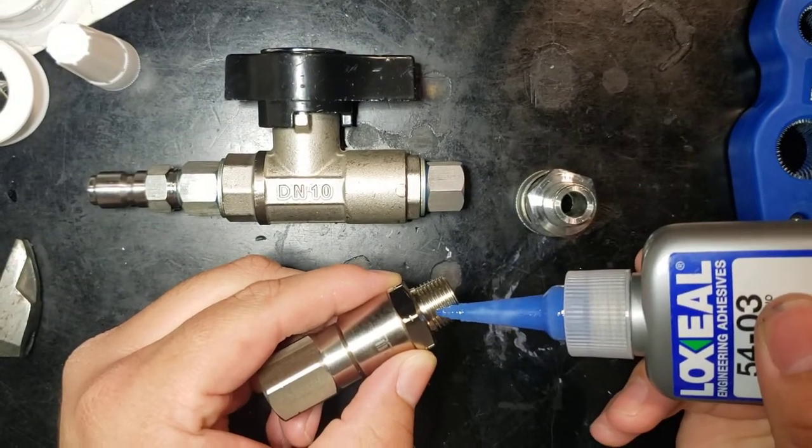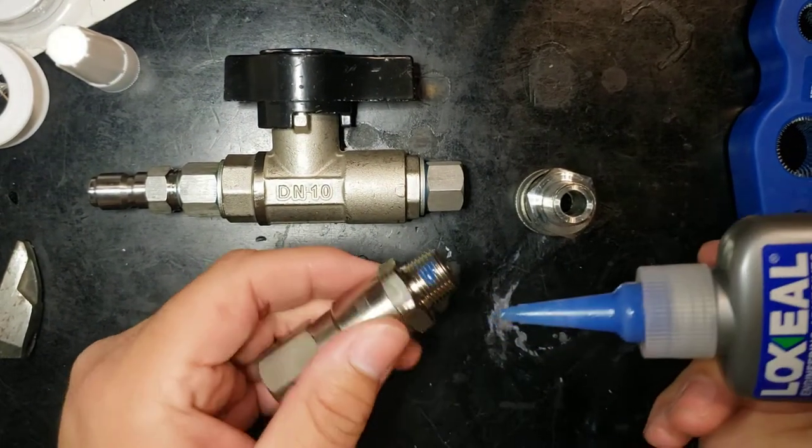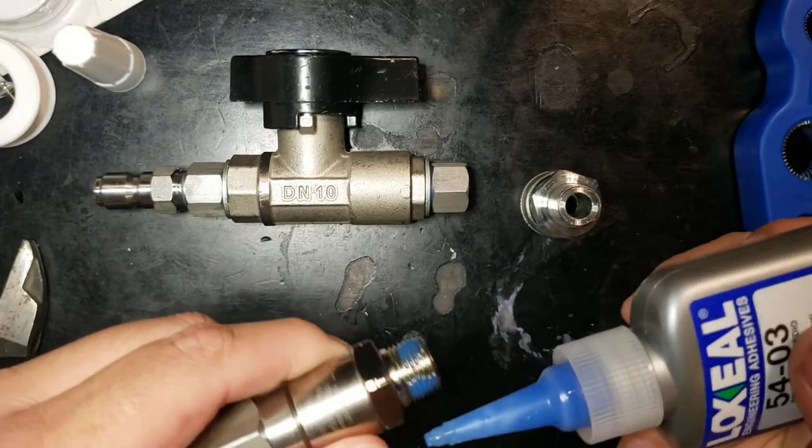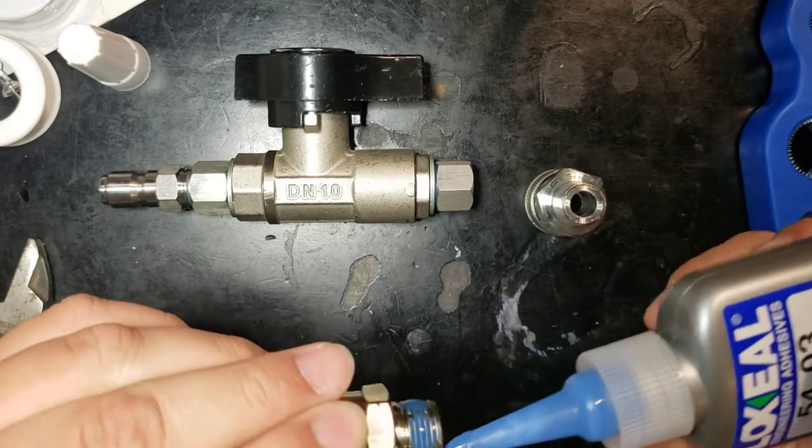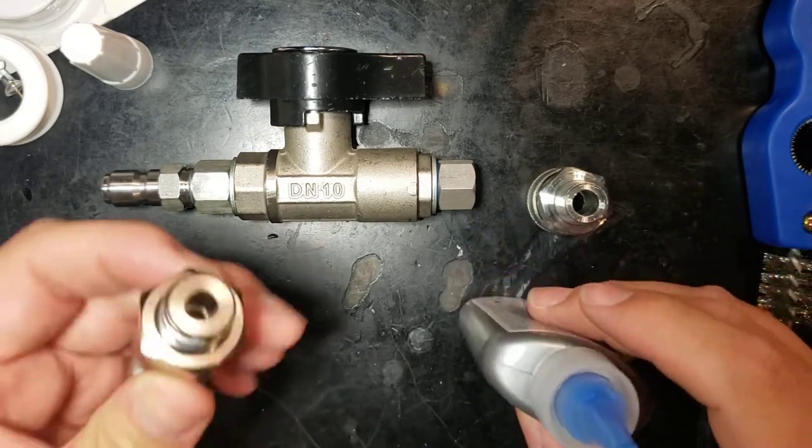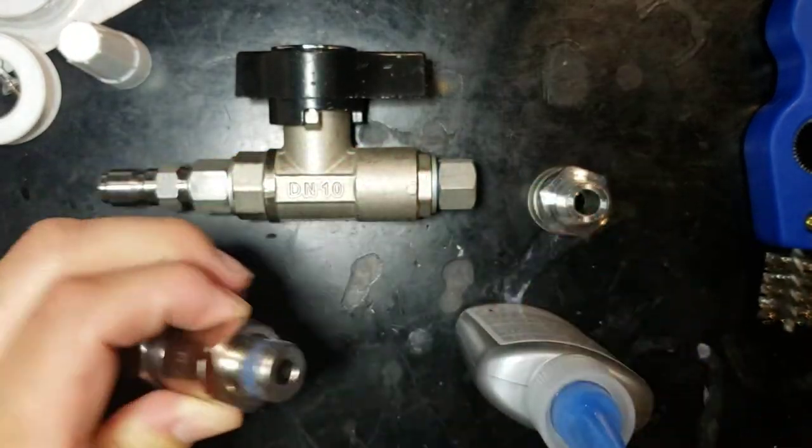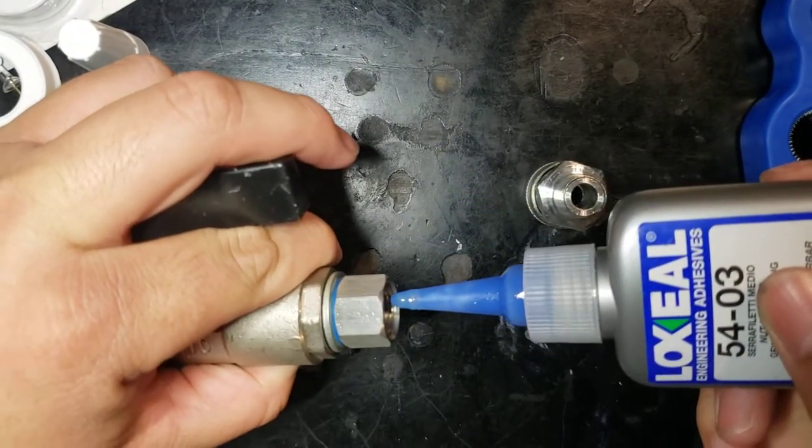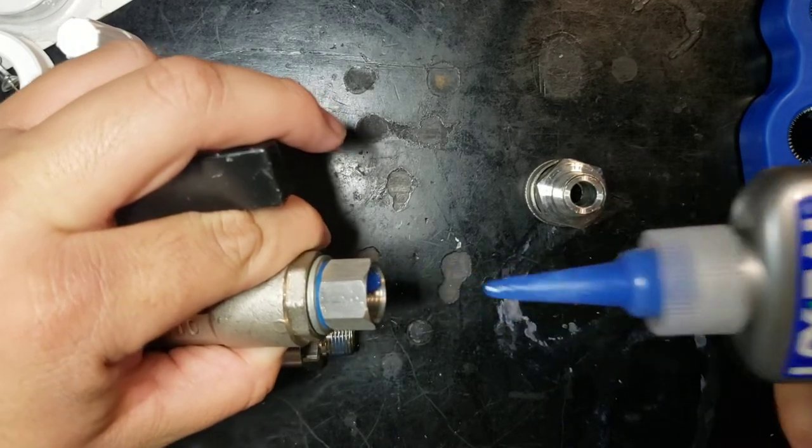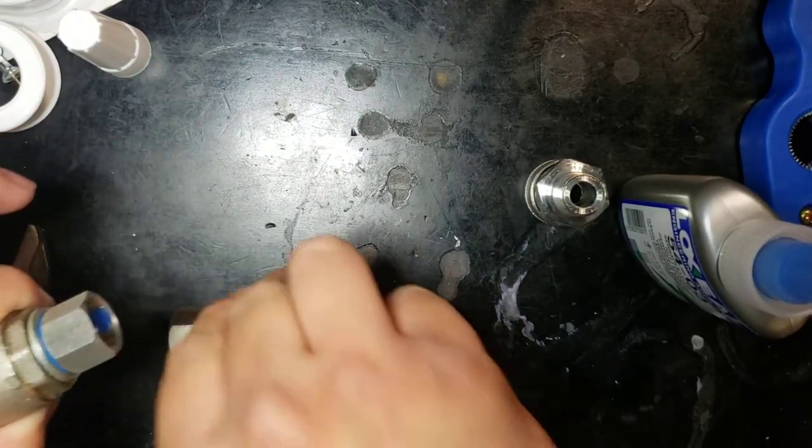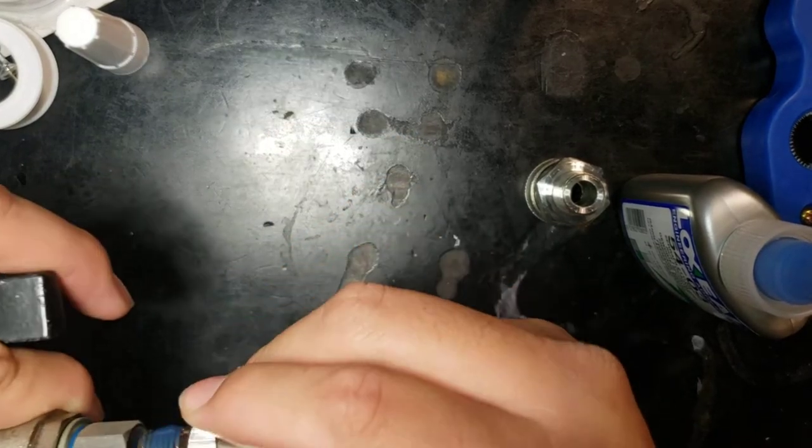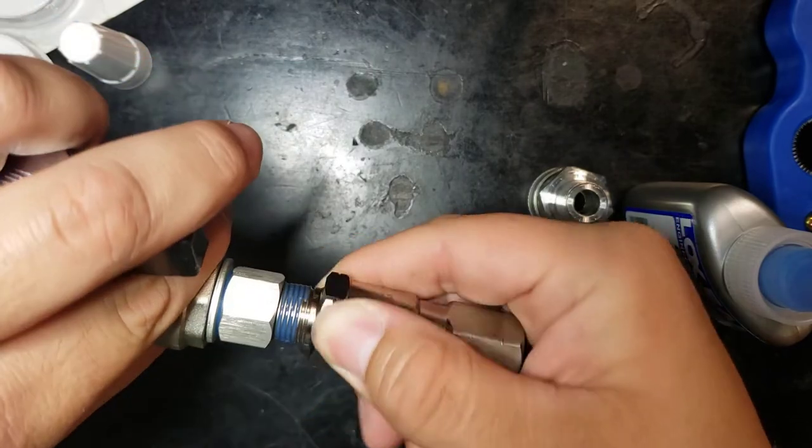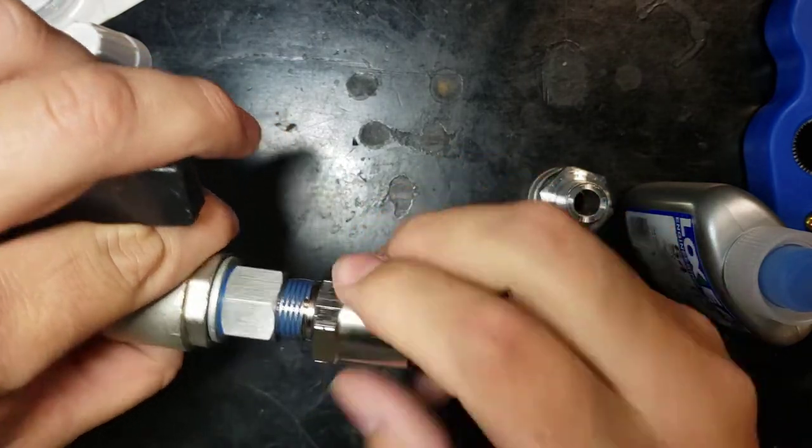So I'll add our thread locker for position, knock them down so they go into the threads. Make sure there's none here on the front face. Just throw a dab in there. Go ahead and hand tighten this to start off with, there you go.